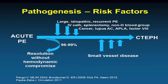Most acute PEs resolve without hemodynamic compromise, though sometimes perfusion defects persist. Risk factors for developing CTEPH include a large PE, unprovoked PE, more than one PE episode, permanent IV catheters or pacemakers particularly if infected, splenectomy, non-O blood group, cancer, lupus anticoagulant, antiphospholipid antibodies, and elevated factor VIII levels. Additionally, these patients develop small vessel disease in areas not occluded by clot, which contributes to symptomatic pulmonary hypertension.